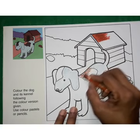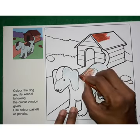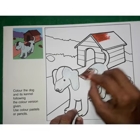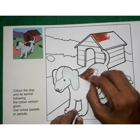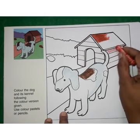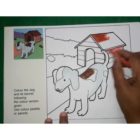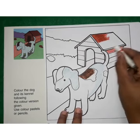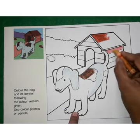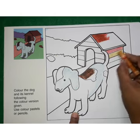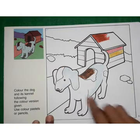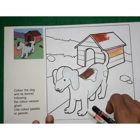For dark brown, mix brown and black. Here, mix red and white. For the shadow of the dog, mix black and white to get grey color.